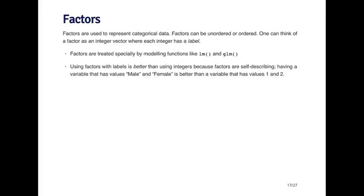For example, male and female. Or you can have ordered factors which represent things that are ranked — they have an order but they're not numerical. For example, in many universities you'll have assistant professors, associate professors, and full professors. Those are categorical but they're ordered.